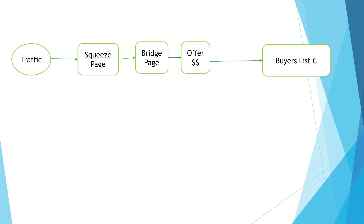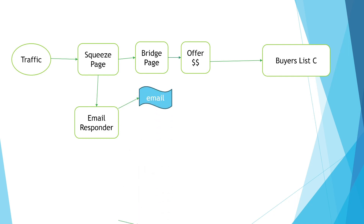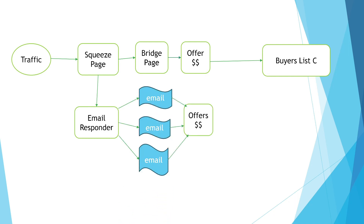That's path number one. Path number two: when they submit their details via the squeeze page, their details are sent to an email autoresponder. That email autoresponder sends out multiple emails with multiple offers. When the traffic decides to buy, they get moved into buyers list C. They will get more offers, sometimes known as low to mid-ticket offers, and once they buy, they move into buyers list B.